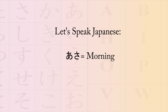The first example word is asa, which uses the letters a and sa, and means morning. So if you were to say 6 o'clock in the morning, it would be asa no rokuji, where rokuji is 6 o'clock. Once more: asa no rokuji, or 6 o'clock in the morning. The word is asa, or faster: asa.